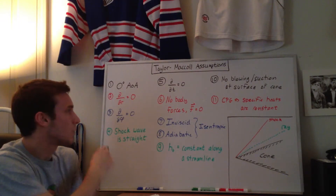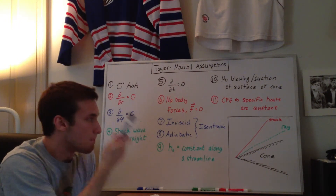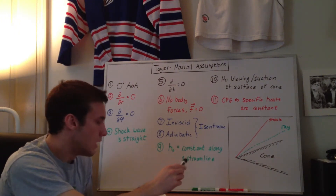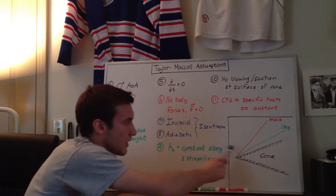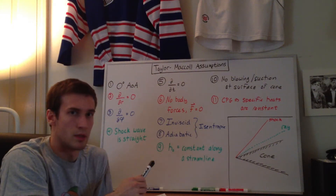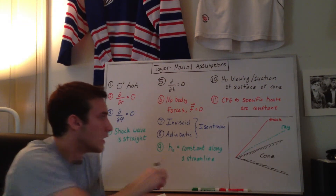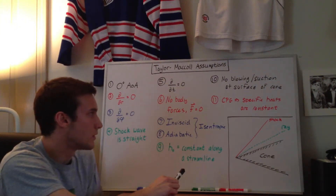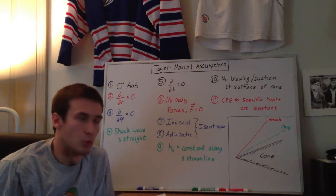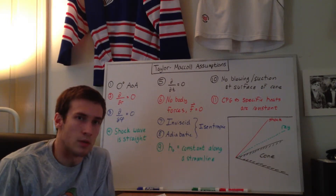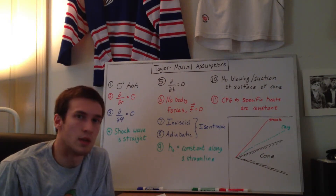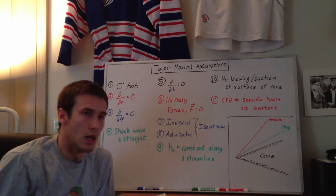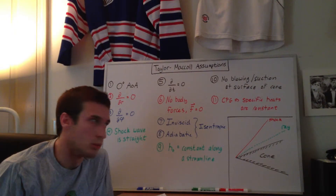The fourth assumption is that the shock wave is straight. When the shock wave is straight, the entropy increase is the same for all streamlines passing through the shock. This is important when you look at Crocco's theorem, which relates the kinematic properties of the flow to the thermodynamic properties of the flow. Assuming constant entropy, along with one of the other assumptions, means that the flow is irrotational, which is important for this derivation as well.